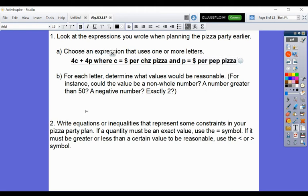All right. For each letter, determine what value could be reasonable. For instance, could the value be a non-whole number, a number greater than 50, a negative number, exactly 2? What are we going to say? So both the cheese pizza and the cost per pepperoni pizza, they can be both decimal or a whole number. They can be both because we can have either $11 or $13, or we could say that they cost $9.50 or $10.25. So it does not matter for money. Both of them can work.